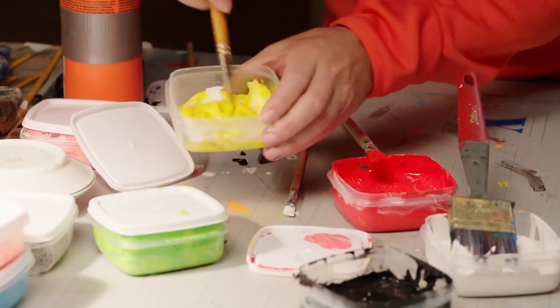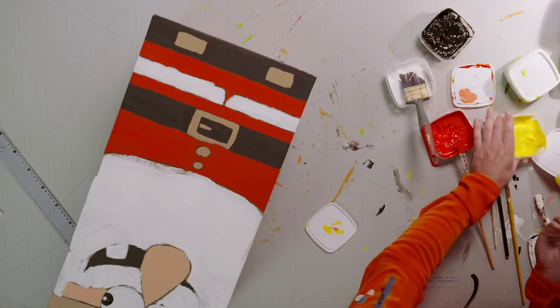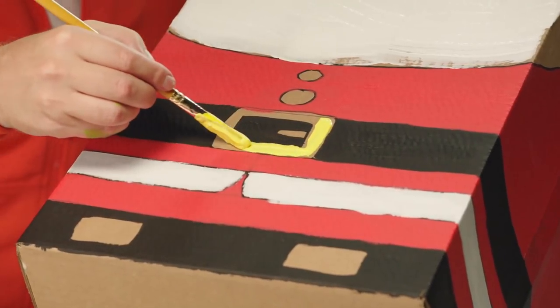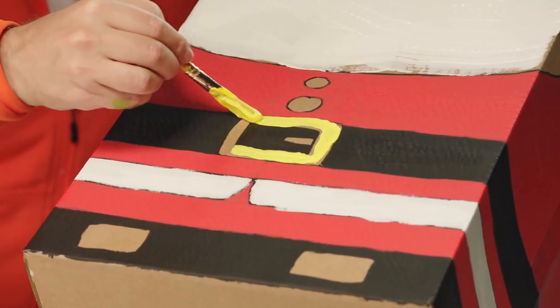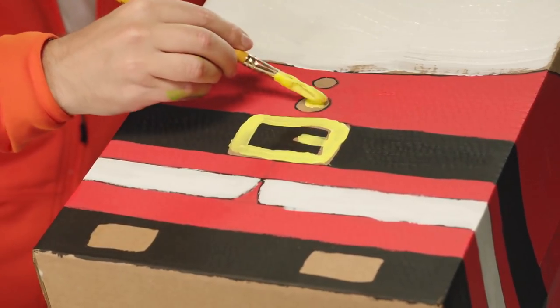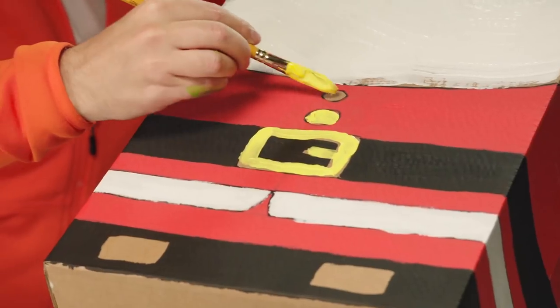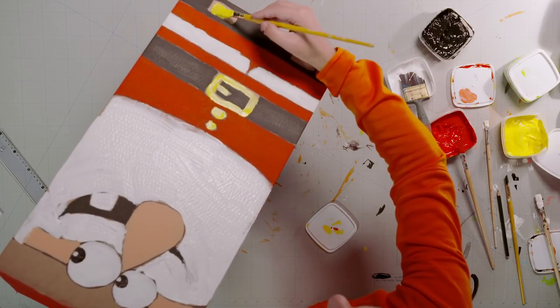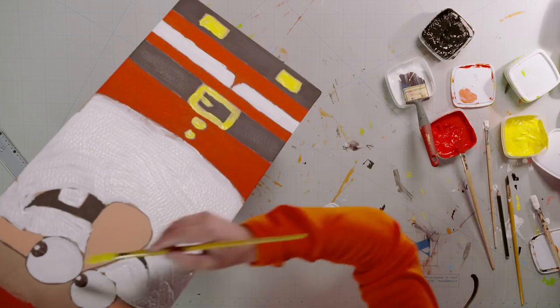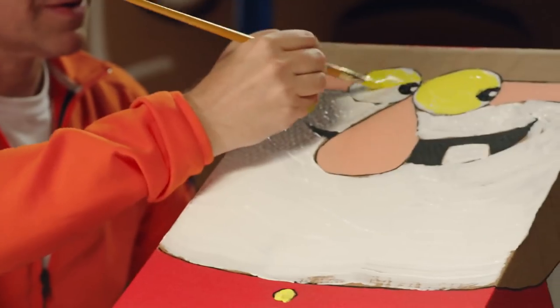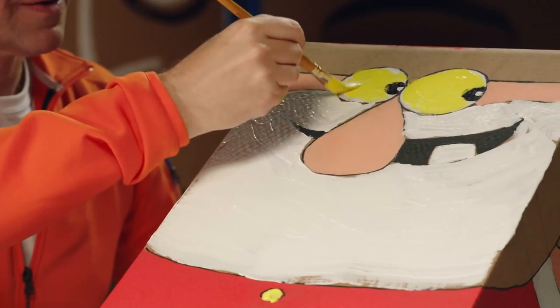Make a bright yellow mixture and paint on some details. His belt buckle. The buttons. Boot buckles. And his eyes. When you mix the yellow with the white, Santa's eyes shine like headlights.